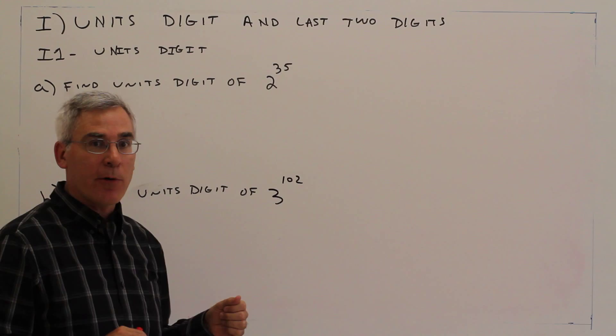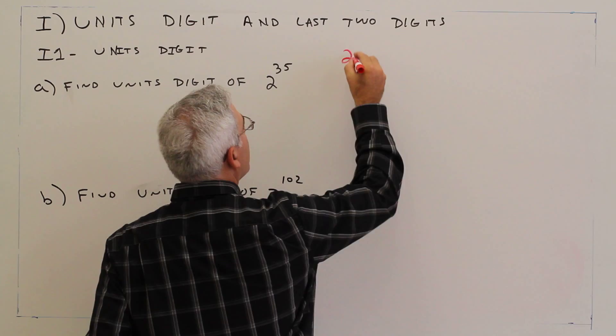First one, find the units digit of 2 to the 35th power. So what we're going to do is look for a pattern.